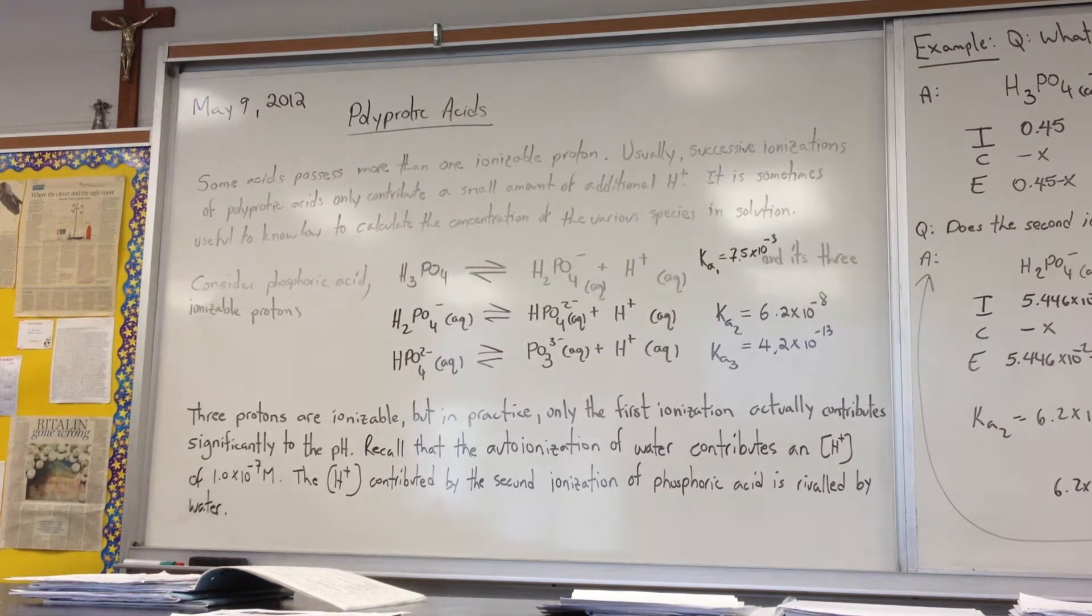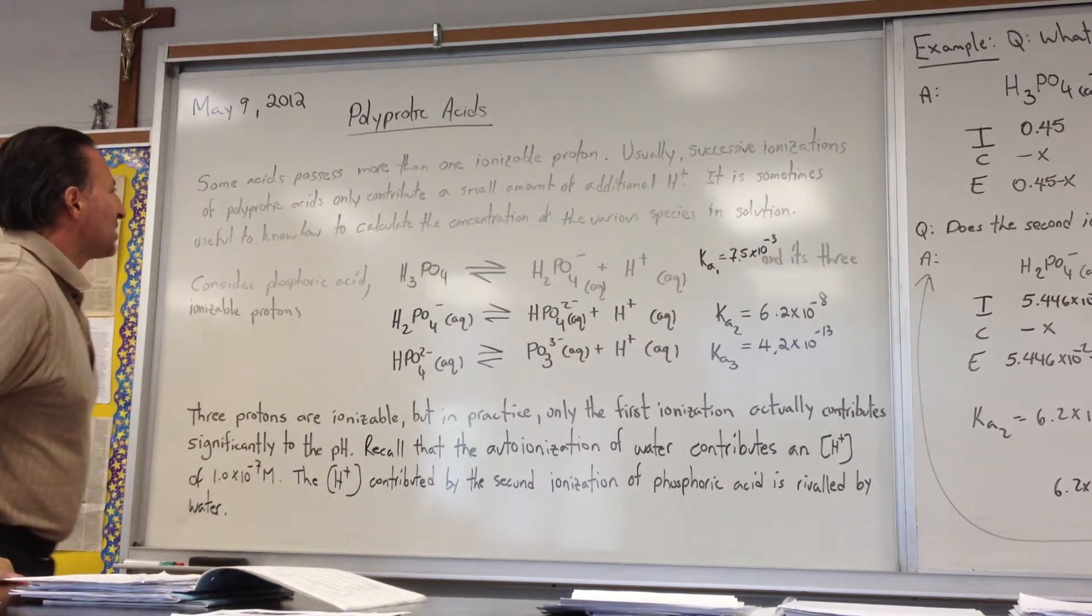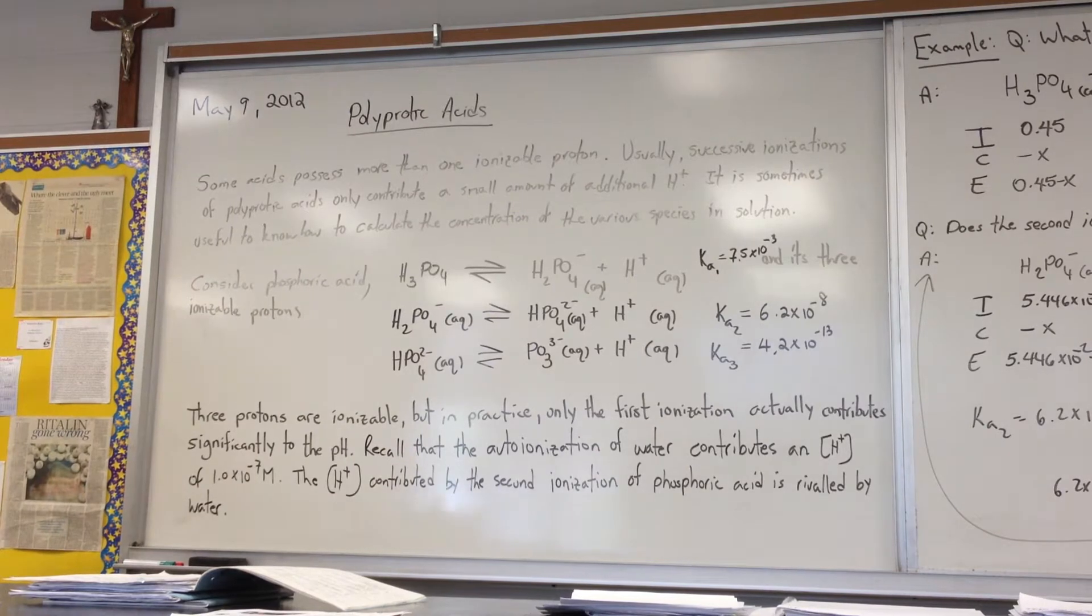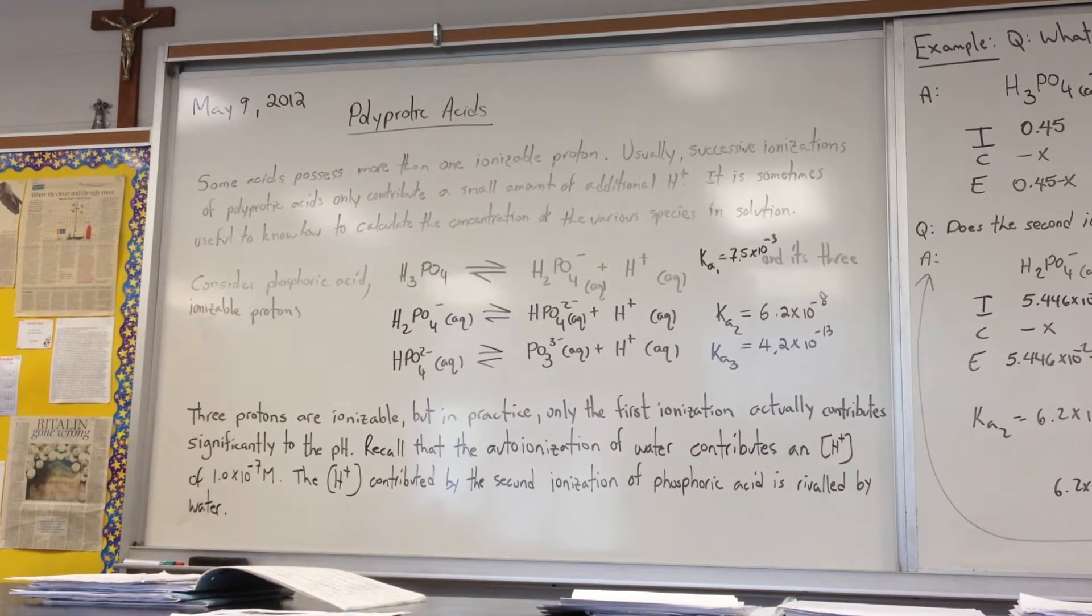Today we're talking about polyprotic acids. Some acids possess more than one ionizable proton, and usually successive ionizations of polyprotic acids only contribute a small amount of additional hydrogen ion. So it is useful nevertheless to know how to calculate the concentration of the various species in solution.